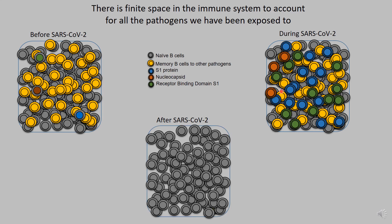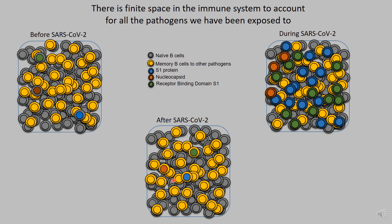After the infection, you again have circulating naive B cells that have not seen any pathogen. You also have memory B cells — both to other vaccines and pathogens you've previously been exposed to, and a new set of memory B cells to SARS-CoV-2. The frequency of these is much lower than during acute infection. The key questions are: how many memory B cells do you generate to SARS-CoV-2, how long are they in circulation, and do they secrete the right kinds of antibodies?